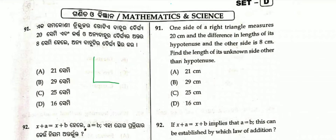Draw this triangle. Label the vertices A, B, C. The length of one side of the right-angle triangle measures 20 cm. Now, hypotenuse minus other side means AC minus BC equals 8 cm.